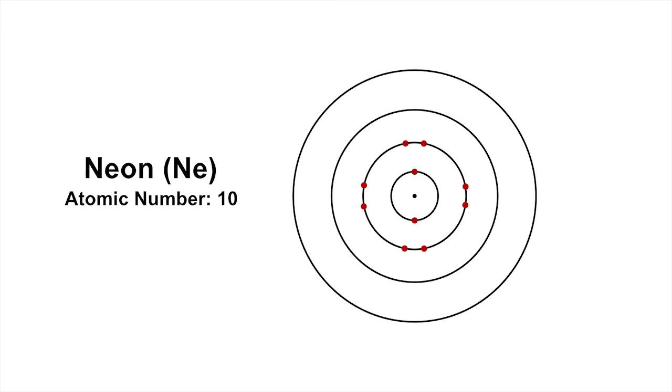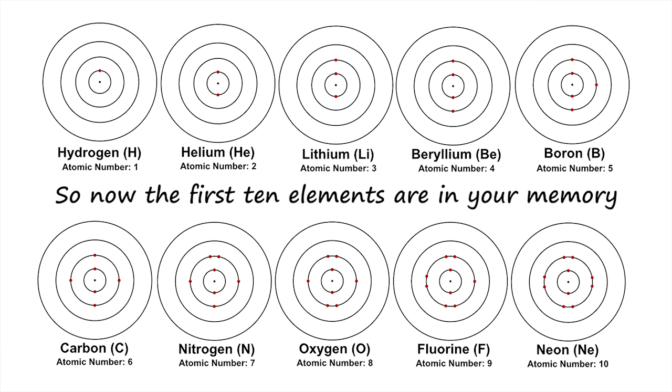Fluorine is F, and Neon is Ne. So now the first 10 elements are in your memory.